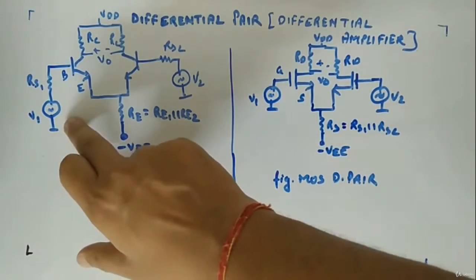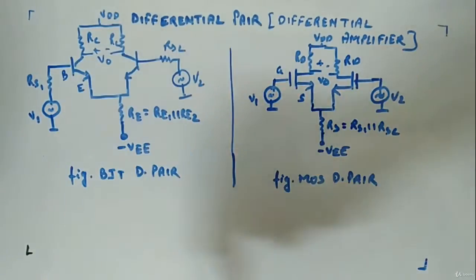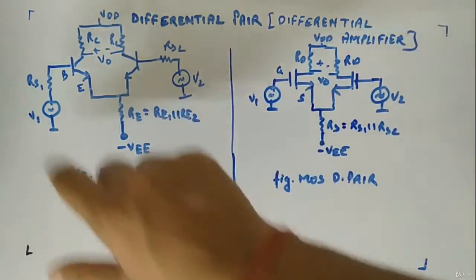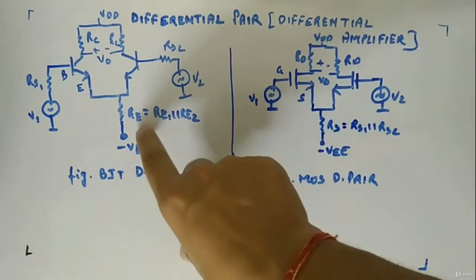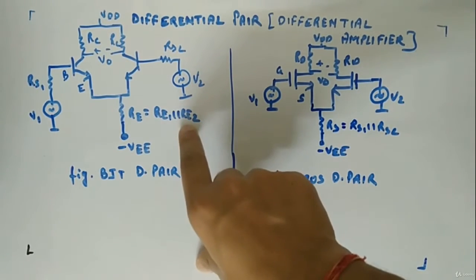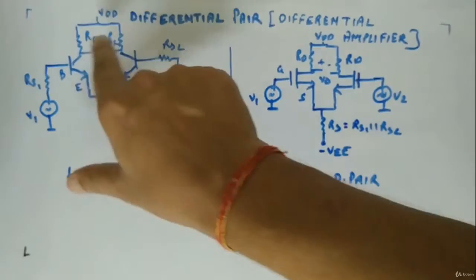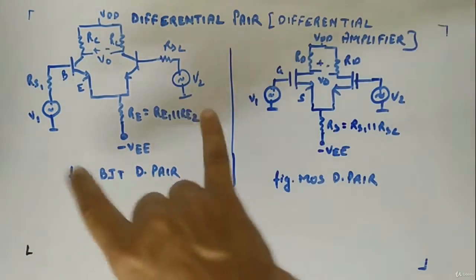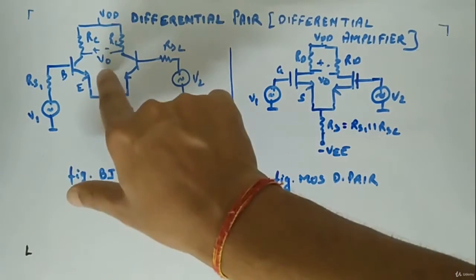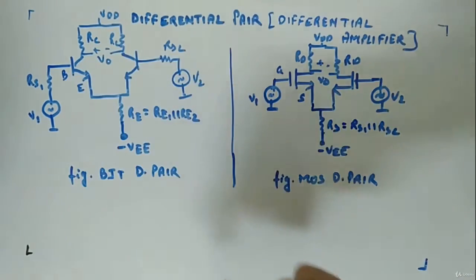Now you can see V1 is there, RS1 is there. This you can think of as source and source resistance. Similarly, you have V2, RS2, then RE which you can think of as RE1 parallel RE2. Then you have RC, VDD minus VE. Inputs are given from here, output is taken from here, from the collectors, both the collectors.